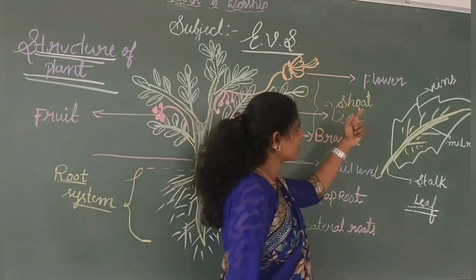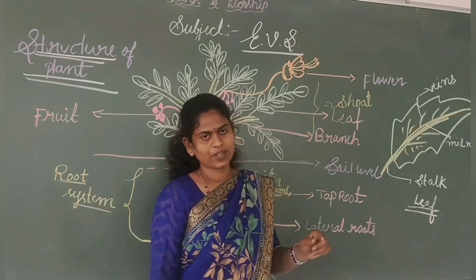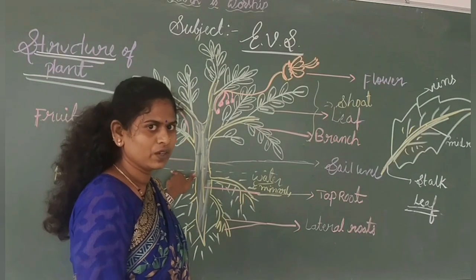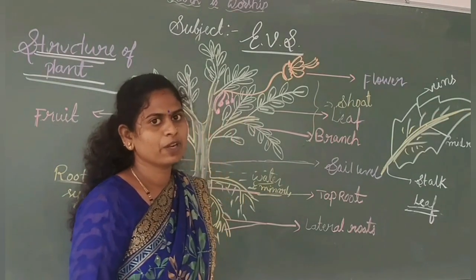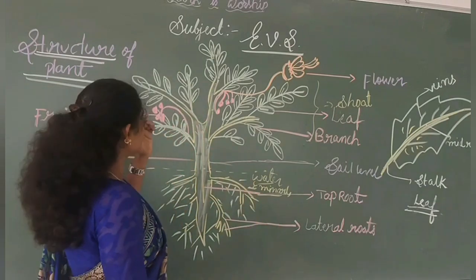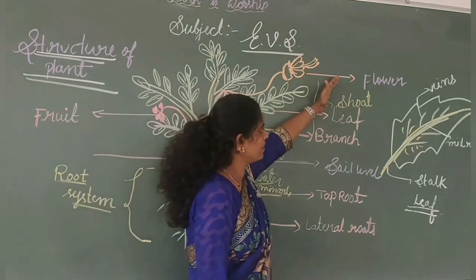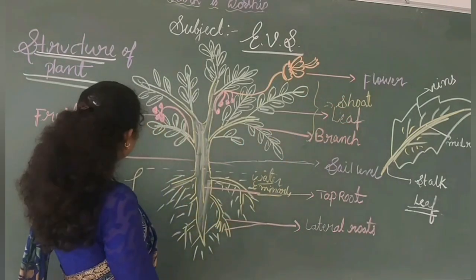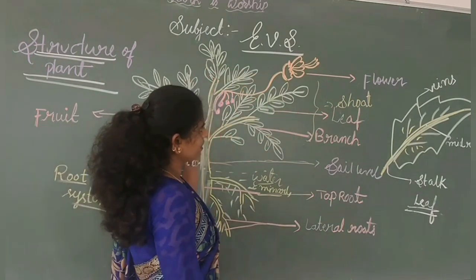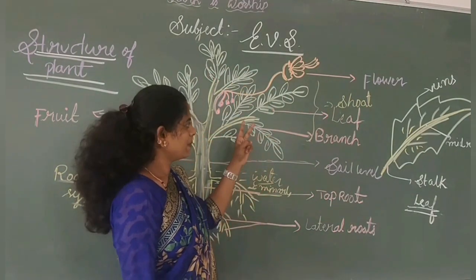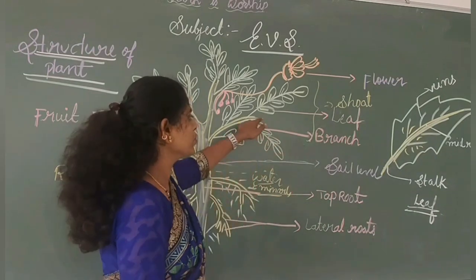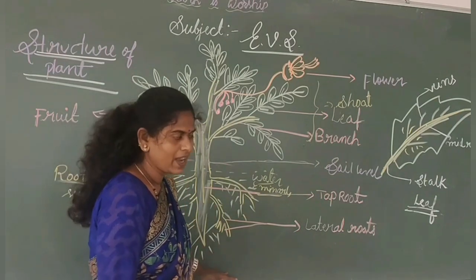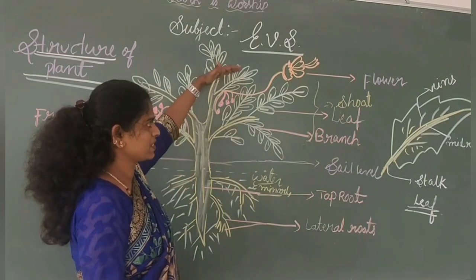These are the important parts of the plant body. Take your notebook and draw the plant diagram. The plant contains different parts such as flower, leaf, branch, roots, and fruit. In the plant, there are two systems: the root system and the shoot system. The root system is present below the soil, and the shoot system is present above the soil. Thank you.